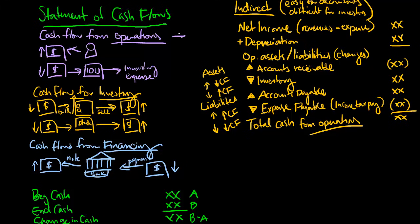For healthy companies, we typically want to see an increase in cash flows from operations. For investing, we typically want to see a decrease, where companies are allocating cash to buy more assets that will hopefully help generate more revenue in the future. With our financing accounts, we may see a plus or a minus depending on whether we need to borrow cash or whether we're paying off our obligations to the bank or to our shareholders.